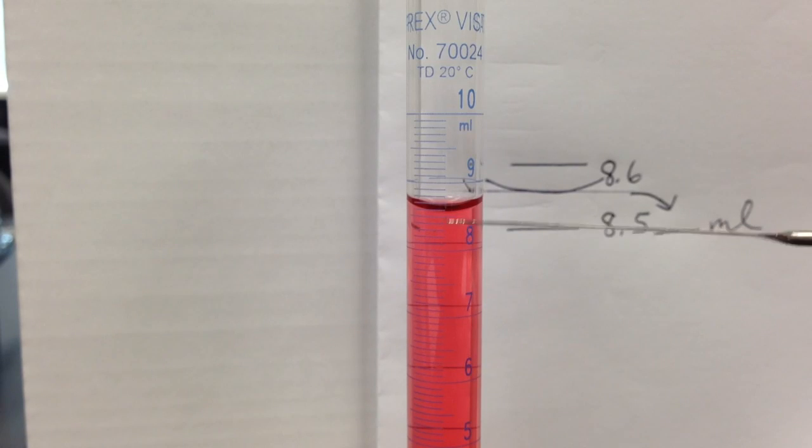As the scientist, as the observer, you need to determine how far between 8.5 and 8.6 the bottom of the meniscus lies. I'm going to estimate it to be 8.56.